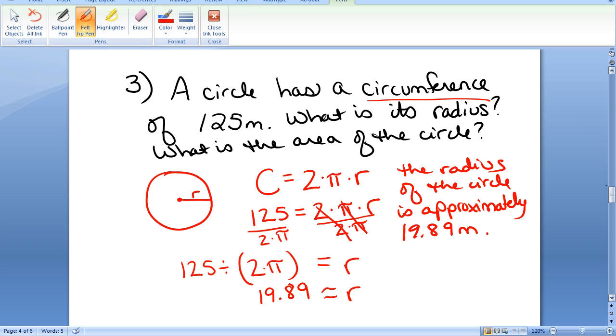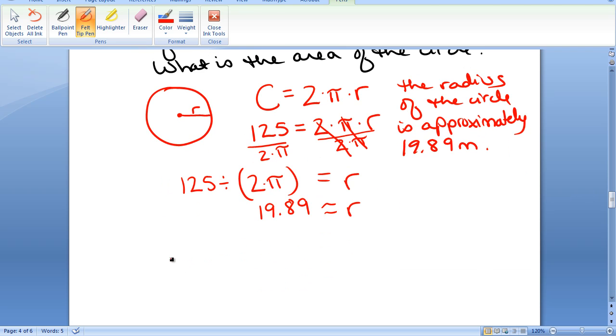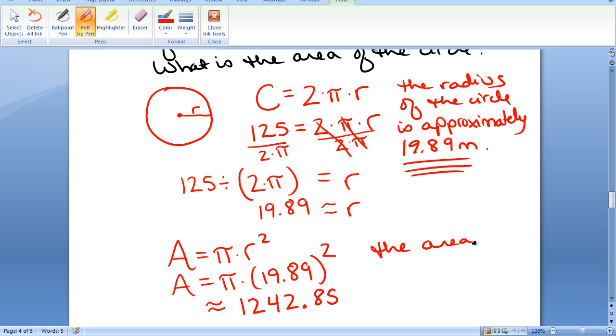We're also asked to find the area of the circle. Well, we know that the area of the circle is pi times r squared. So we know the radius of the circle is 19.89. So I plug that in for radius. That's being squared. I pull out the calculator and get an approximation. I get about 1242.85. So the area of the circle is approximately 1242.85 square meters.